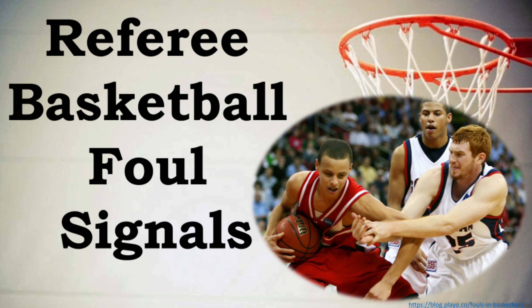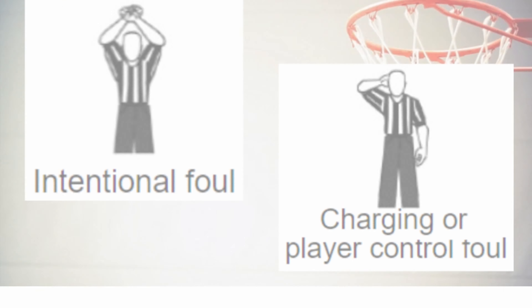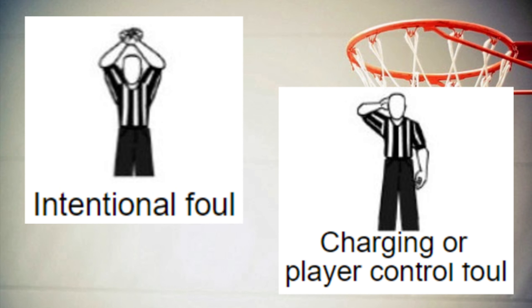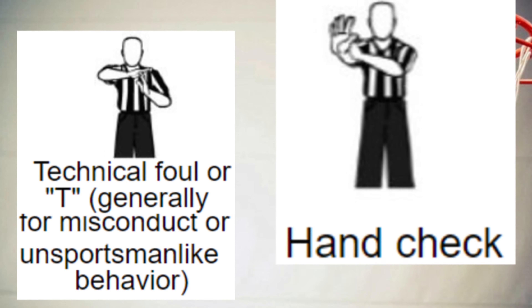Referee basketball foul signals: the first is holding. Next is pushing. The third is blocking. The next is intentional foul, followed by charging or player-controlled foul. Next is technical foul, generally for misconduct or unsportsmanlike behavior. The last foul signal is hand check.